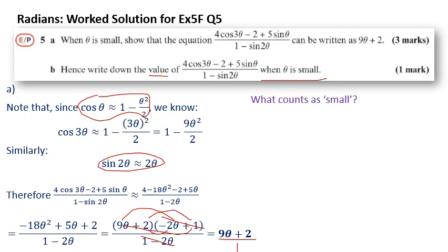But if theta is really, really small, and we're talking 0.01 or something like that, then 9 theta plus 2, you start to see that even something linear is more complicated than it needs to be. As theta gets smaller and smaller, that term gets closer and closer to 2. So in this case, we just say when theta is small, 9 theta plus 2 equals 2. You essentially make theta equal to 0.